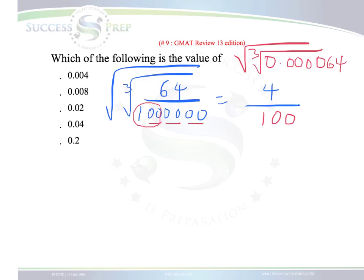Now remember, we still have a square root over that, so we're going to do the same thing. What is the square root of 4? 2. The square root of 100 is 10.